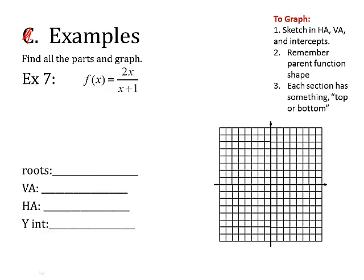Let's try another one. Look at this one. Let's do roots first. Set the numerator equal to 0 and solve it. So, x is 0. Vertical asymptote. Set the denominator factors equal to 0. We just have 1. And, solve it. So, x is equal to negative 1.